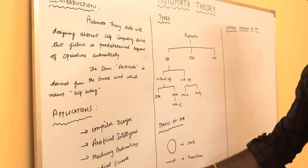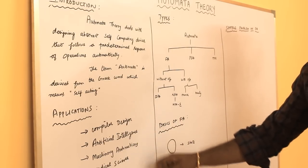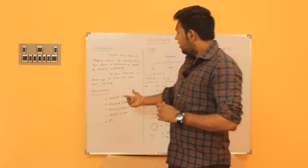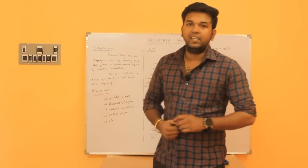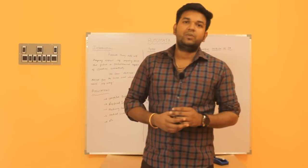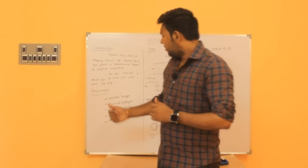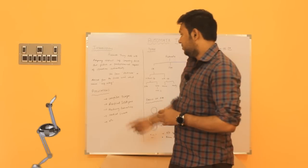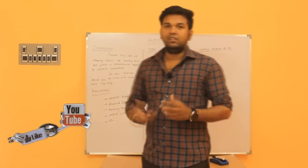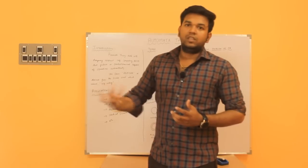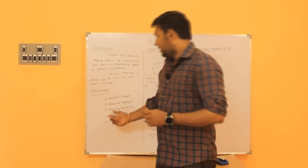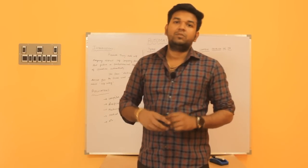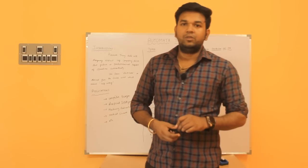The applications of Automata are: compiler design, artificial intelligence, machinery automation, medical science, and more. Automata is used in compiler design. For artificial intelligence and robotics, we can use Automata concepts. For machinery automation processes, we can use Automata concepts. For medical diagnosis — that is, disease diagnosis and predictions — we can also use Automata concepts.